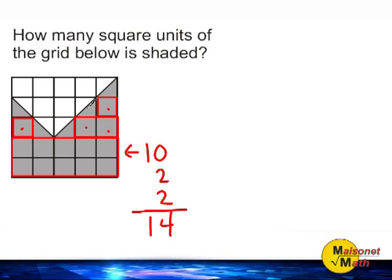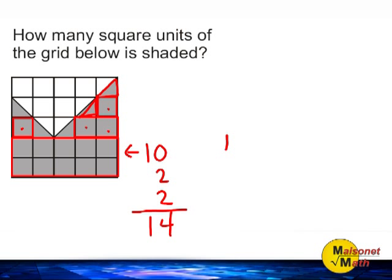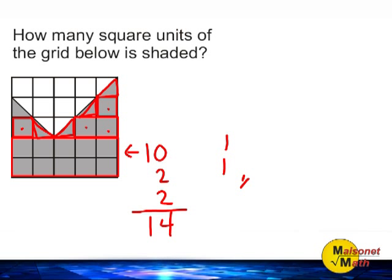But notice we have half square units that we have to put together. If we combine this half of a square unit with this half of a square unit, that gives us one more whole square unit. And then we have another half here and another half right here, which gives us another whole square unit. And we have half of a square unit left over, so I'm going to write one half right here.